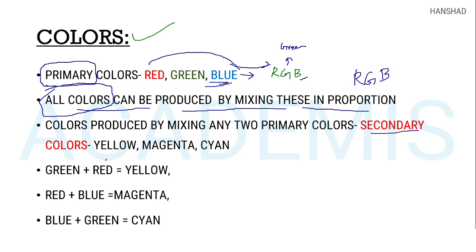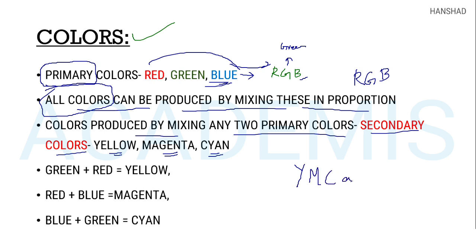The secondary colors — what do we call the secondary colors? They are yellow, magenta, and cyan. Three of them are YMC — yellow, magenta, cyan.